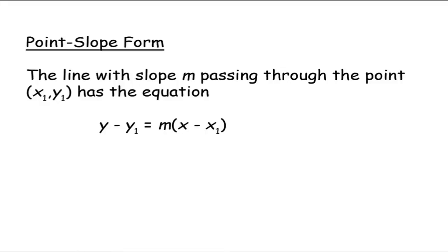The line with a slope m passing through a specific point we're calling x sub 1, y sub 1, that's just to denote some generic point, has the following equation: y minus y sub 1, which comes from that point right there, equals the slope m times x minus x sub 1, the x part of the point that we know that our graph goes through.